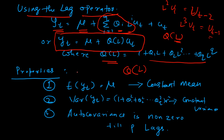There are a few properties of the MA series. The expectation of YT is constant, and you can easily prove that. If you take the expectation on both sides, the expectation of UT is 0, so that term cancels out and you are left with only the constant term. So an MA series has a constant mean.